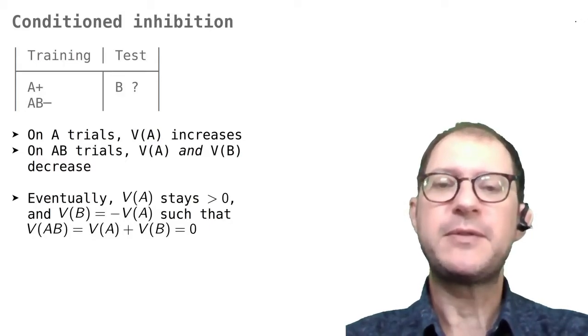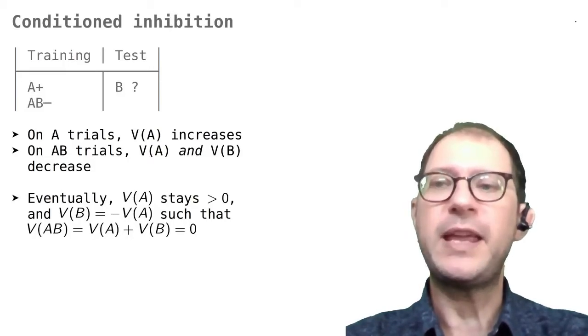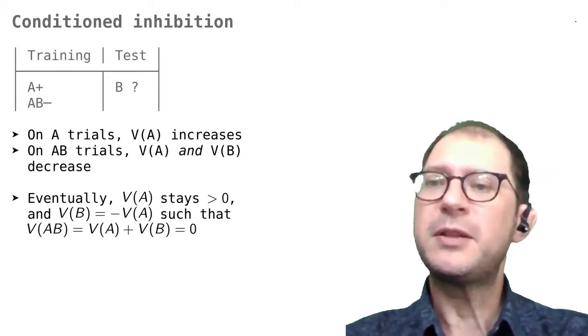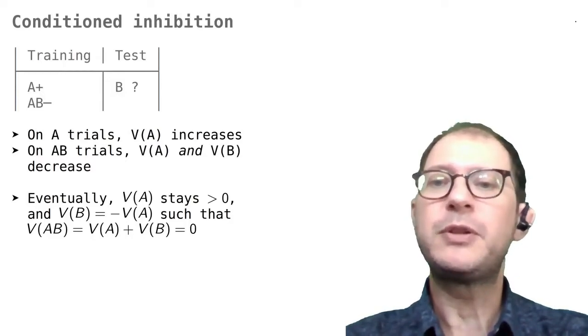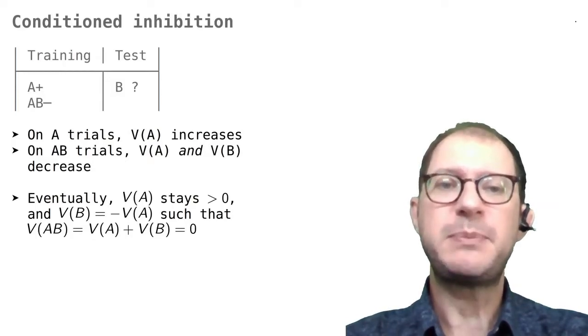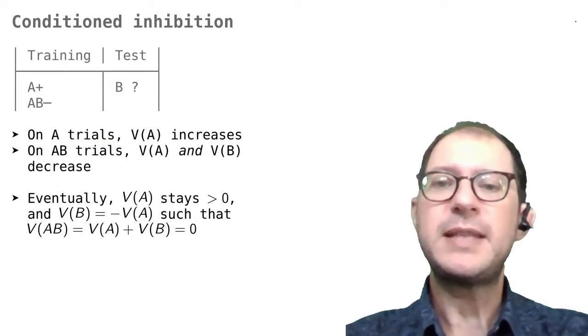The training phase of a simple conditioned inhibition experiment has a rewarded presentation of A and unrewarded presentation of A and B together, as indicated in the table. Note that the two lines for A plus and AB minus do not indicate two different groups of animals, but they indicate that two different kinds of experiences are given to the same animals.